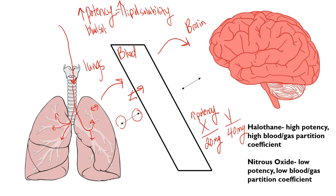Let's not confuse potency with blood solubility. We said increased potency means you need less of the drug to show effects. A decrease in blood solubility means the drug will act faster — it doesn't matter what the dose is. From the time you give the drug at time zero, a drug with lower blood solubility will reach the brain and begin showing effects sooner. So decreased blood solubility means a faster onset of action.